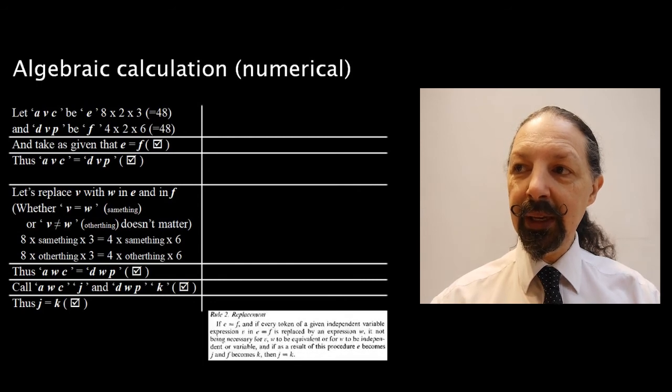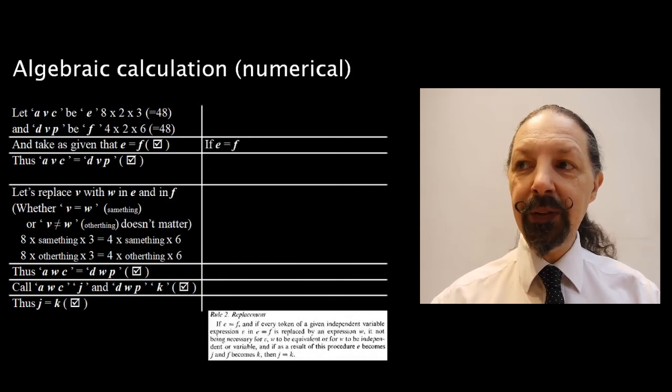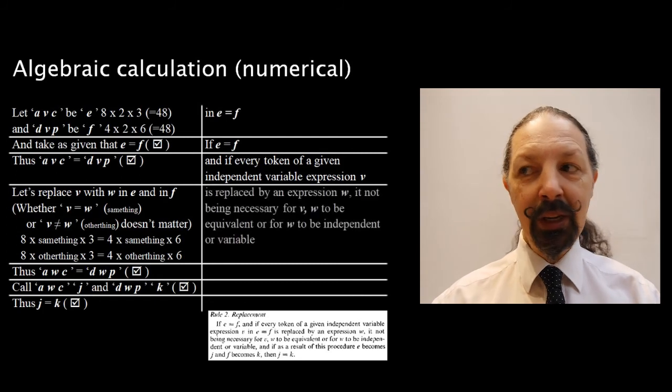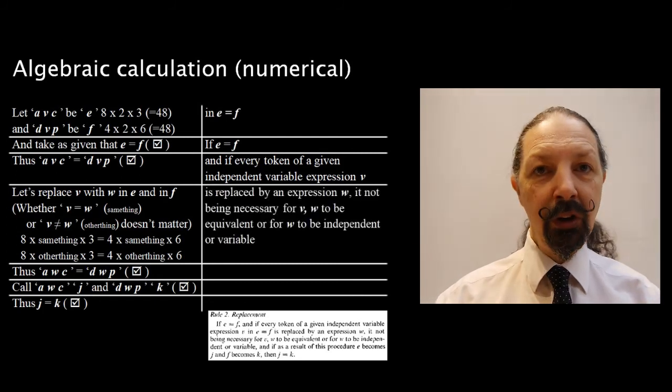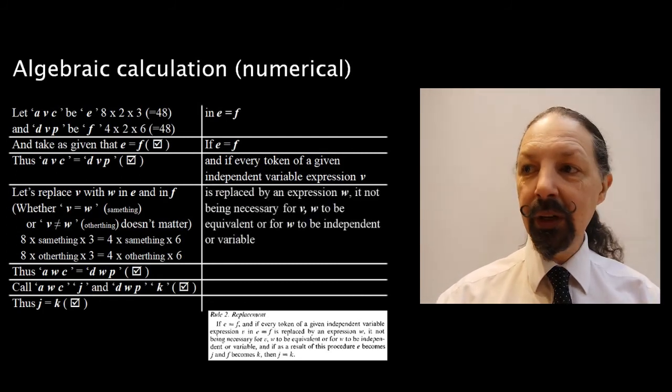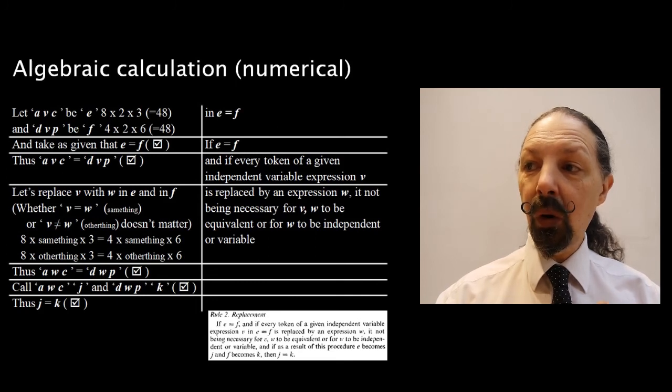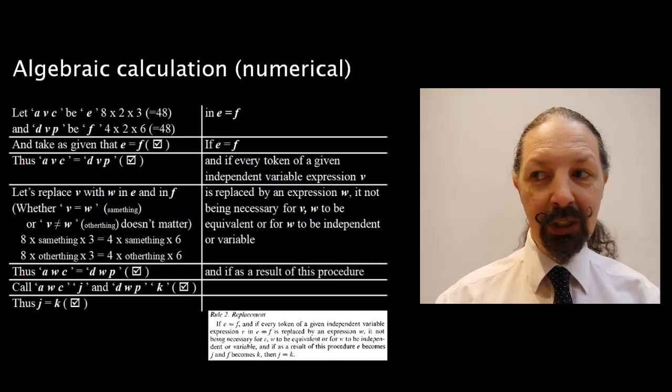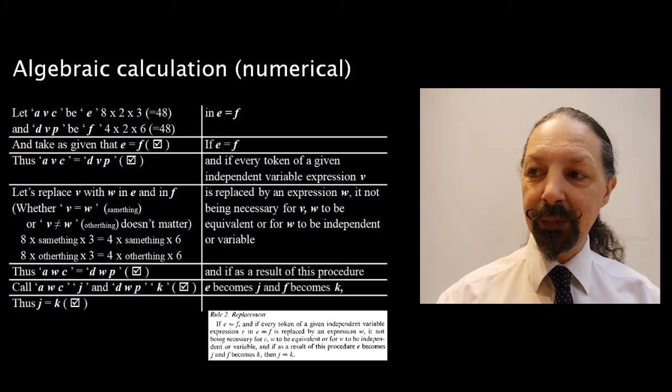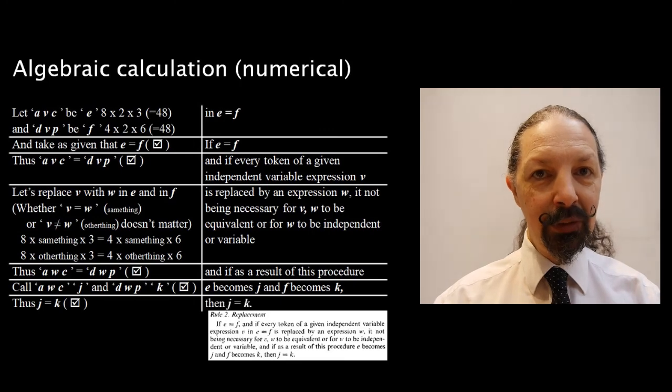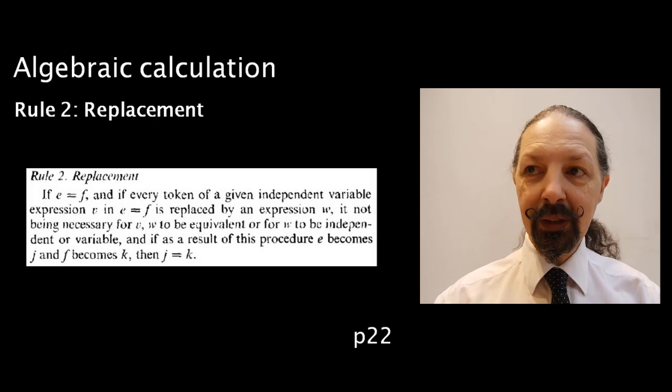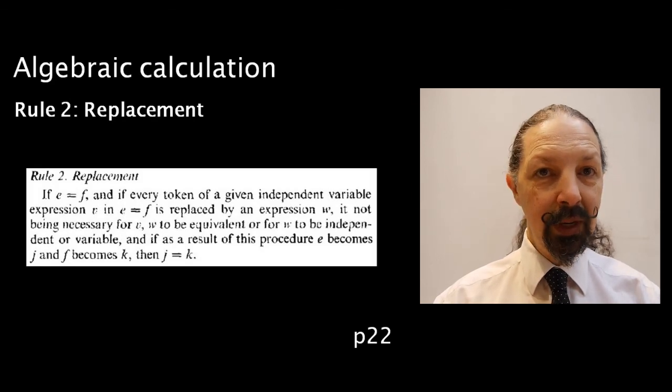Here's Spencer Brown's wording, here's how it compares. If E equals F, and if every token of a given independent variable expression V in E equals F is replaced by an expression W, it not being necessary for W to be equivalent to V, or for W to be independent or variable, and if as a result of this procedure E becomes J and F becomes K, then J equals K. And that satisfies the demonstration that rule 2 replacement works.